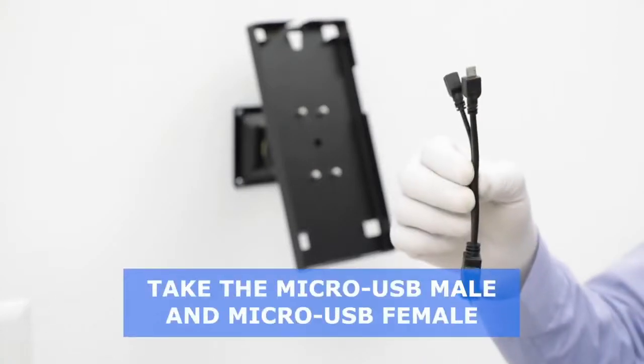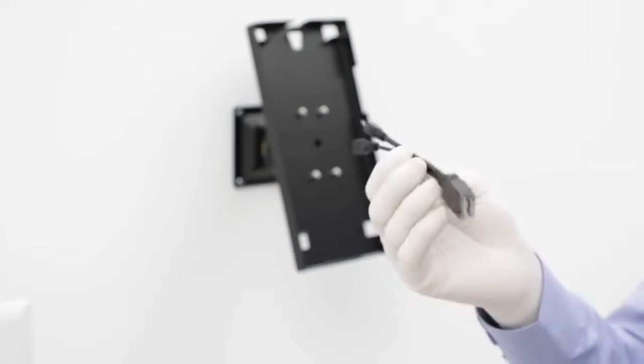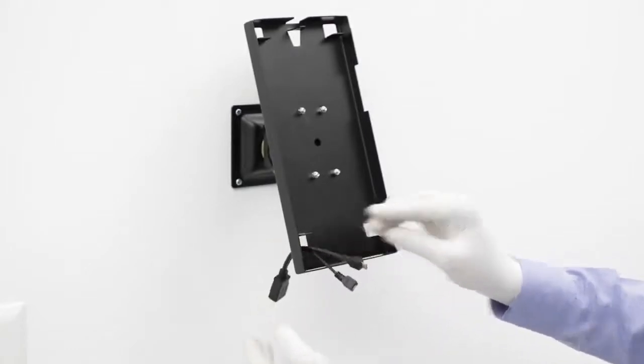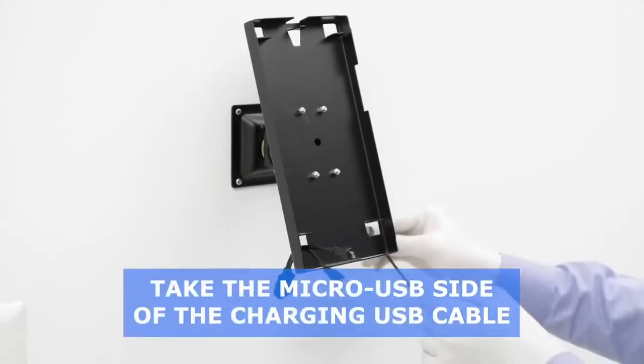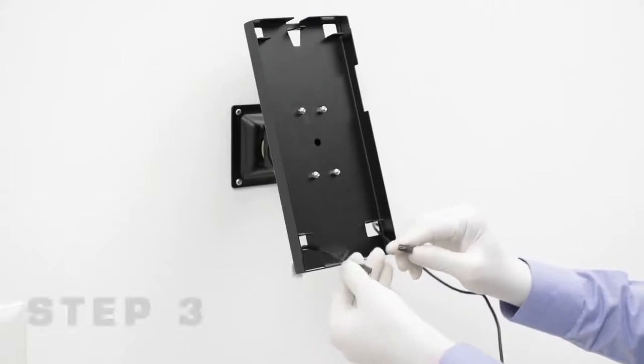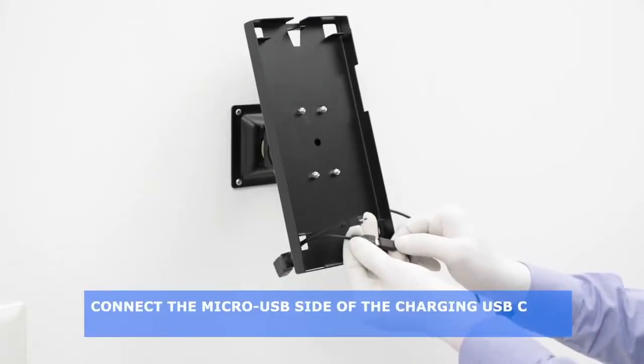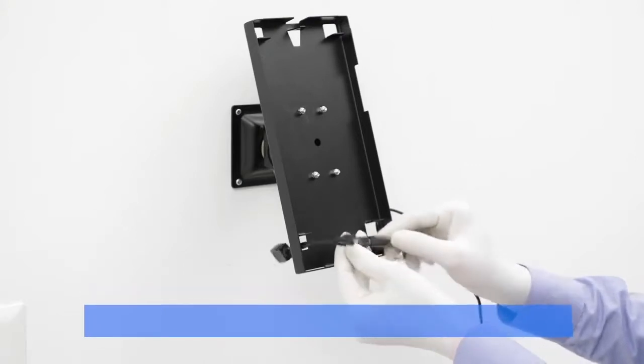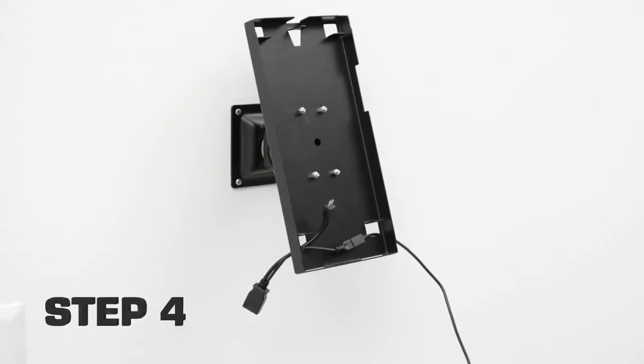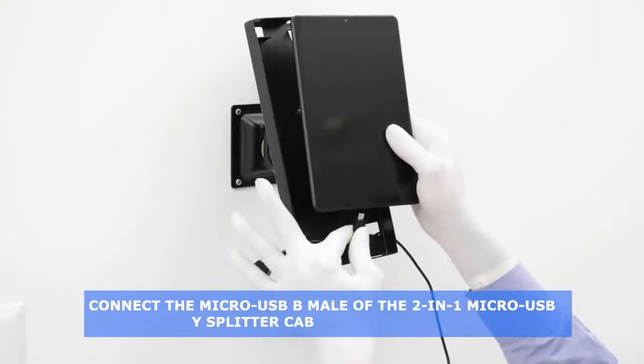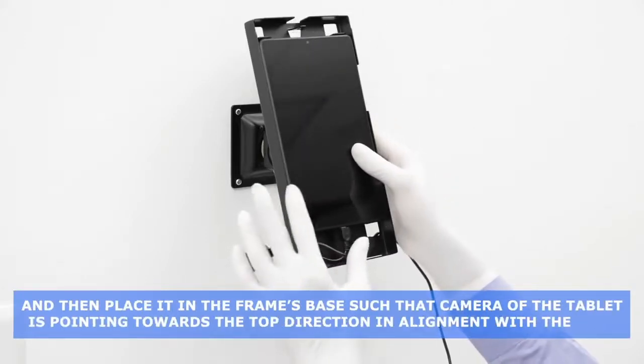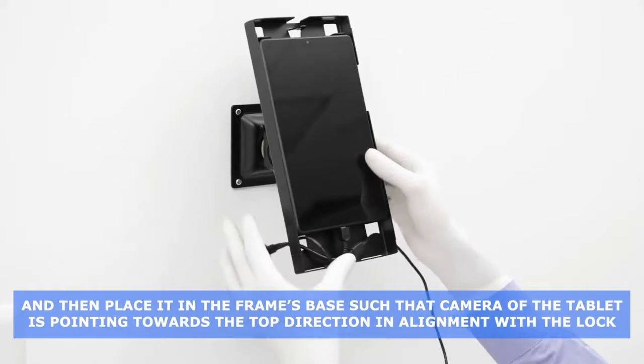Step 1: Take the micro USB male and micro USB female side of the 2-in-1 micro USB Y splitter cable and pass it through the left-sided slot provided at the bottom of the frame's base. Step 2: Take the micro USB side of the charging USB cable and pass it through the right-sided slot provided at the bottom of the frame's base. Step 3: Connect the micro USB side of the charging USB cable to the micro USB B female of the 2-in-1 micro USB Y splitter cable and tuck it neatly in the bottom part of the frame's base.